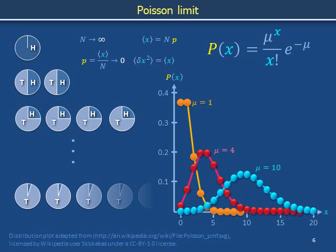In this video we have introduced the Poisson limit by illustrating the pie charts to the left. Because the slices corresponding to heads shrink to tiny slivers going from the top to the bottom of the page, the Poisson limit is sometimes called the limit of rare events. To analyze this limit, we worked through the mathematical expressions at the top and plotted the probability distributions to the right.